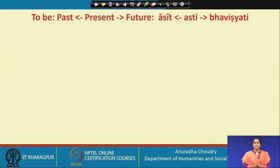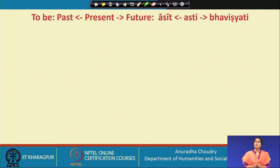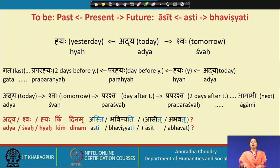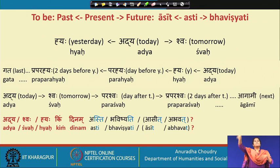For example: idhanim karyam asti — now there is work; idhanim vargaha asti — now there is a class. Hyaha bahukaryam asit — yesterday there was a lot of work. Shvaha parikshah bhavishyati — tomorrow there will be an exam. Looking at time words: hyaha, adhya, and shvaha. Extending temporally, starting with today as reference: adhya, hyaha, parahyaha, praparahyaha — today, yesterday, day before yesterday, and the day before that.